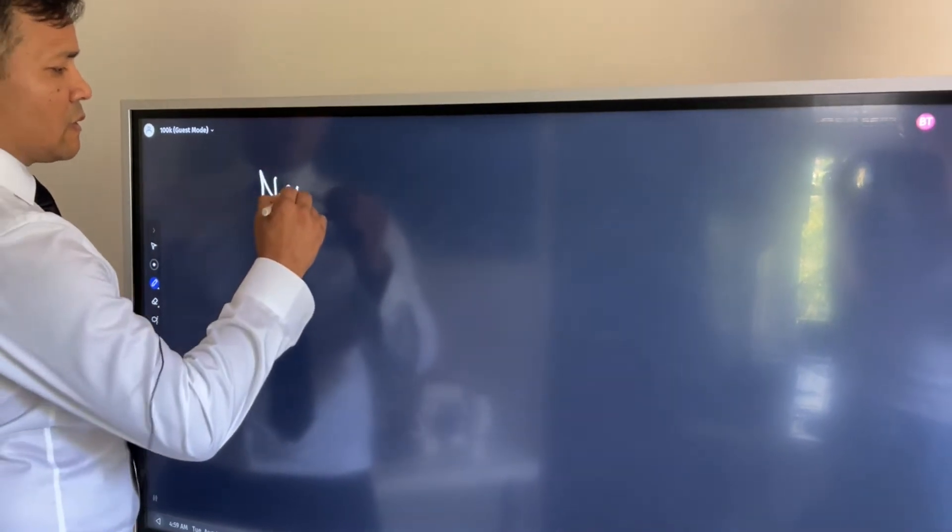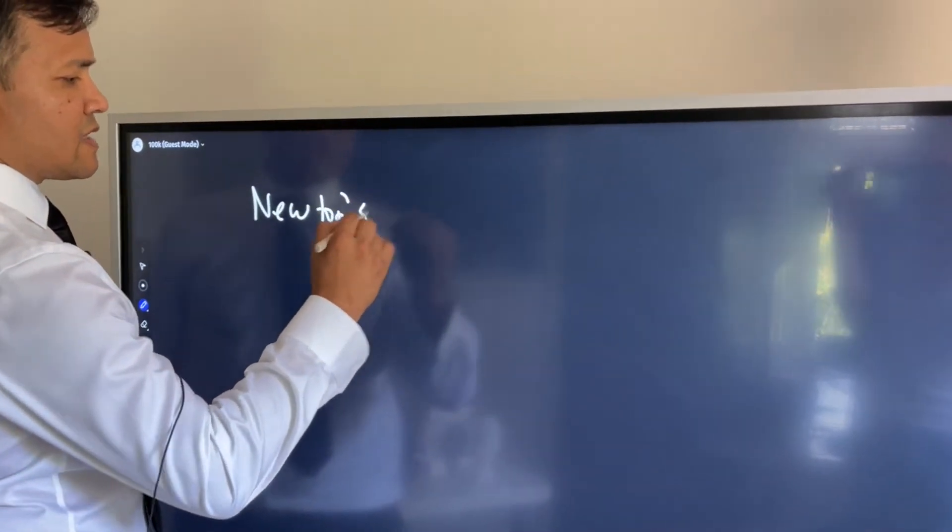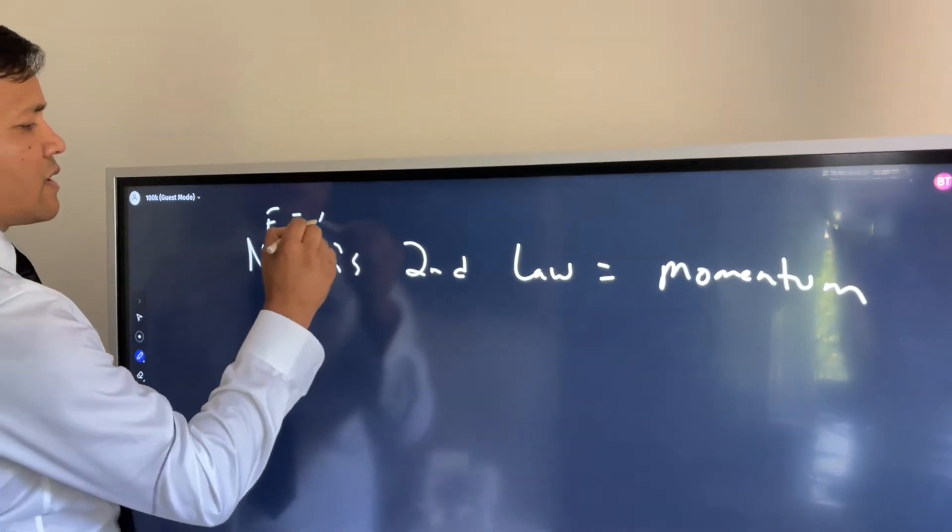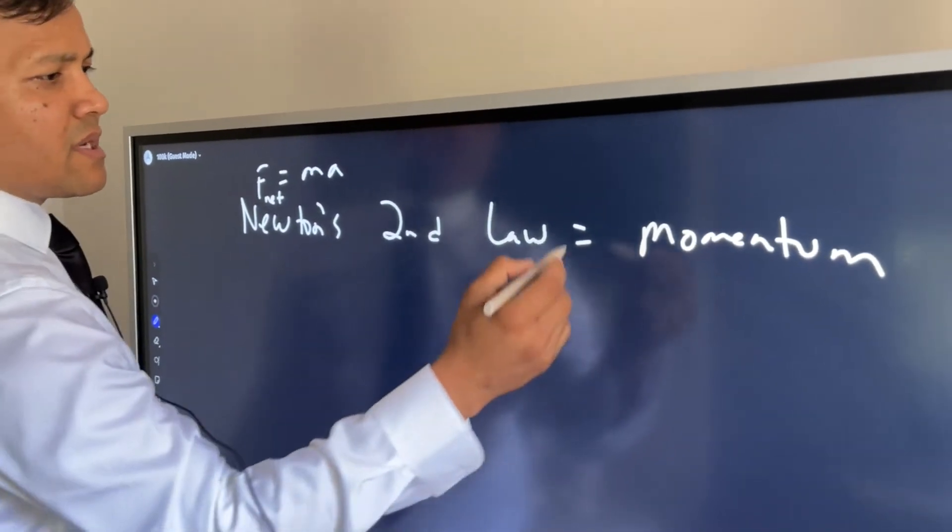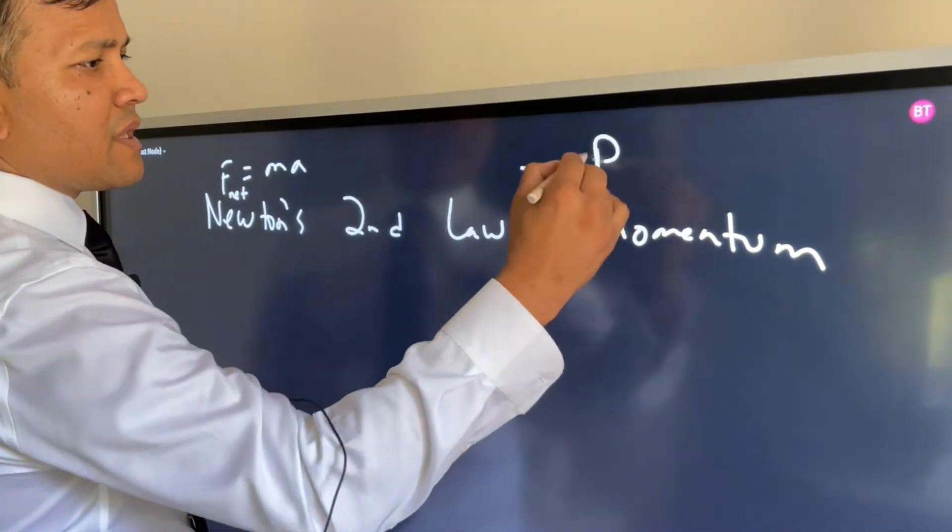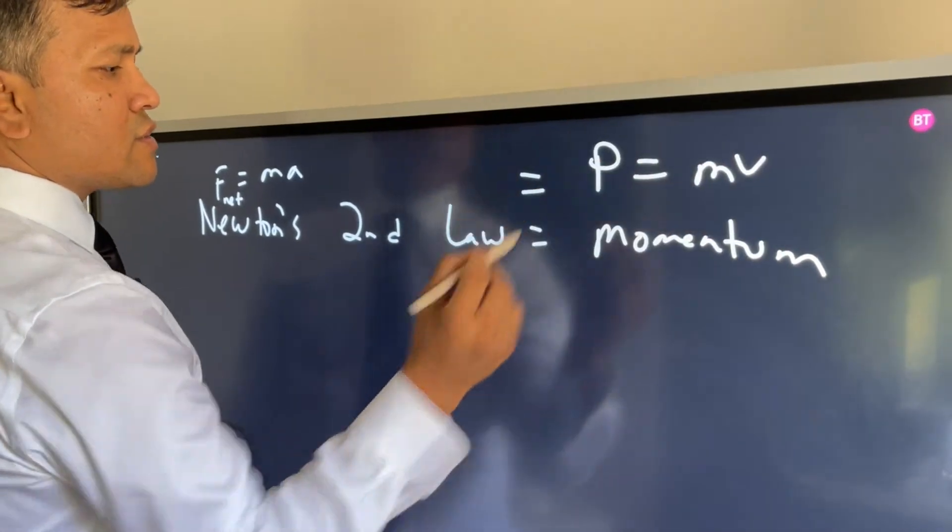So now, theoretical understanding. Newton's second law is F=ma, of course. And what is momentum? Momentum is p=mv. So we are saying that this equals this.